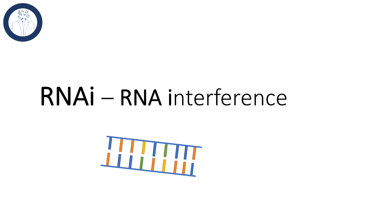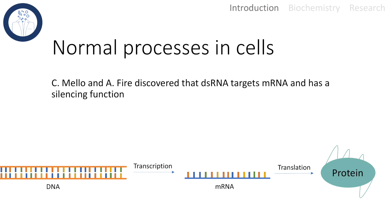Hello and welcome to today's talk about RNAi, or RNA interference. I'd like to introduce it by explaining the usual processes that happen in a cell, which can be summarized with the central dogma of molecular biology. To keep it simple, if DNA is transcribed into mRNA, it is usually translated to an amino acid sequence which forms a protein.